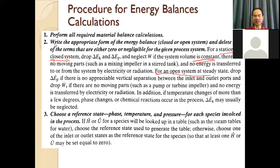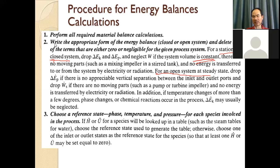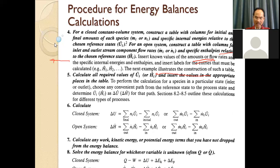We must choose a reference state because we cannot calculate enthalpy at a pure absolute state — we can only calculate the change in enthalpy. Mostly, we refer to some state. If you are working with steam, you can use the steam table, which refers to the triple point. If there is no steam table available — like for acetone or benzene — and you have no data, you can choose the inlet or outlet condition as the reference state. If you choose inlet as reference, the enthalpy or internal energy at that reference state is zero.